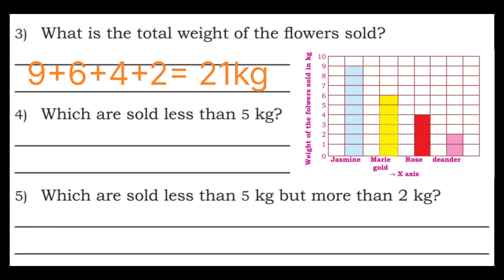Question 4, rose is 4 kg. Question 5, which are sold less than 5 kg but more than 2 kg? More than 2 kg is rose. Less than 5 kg is 4 kg which is rose. So rose is the answer.